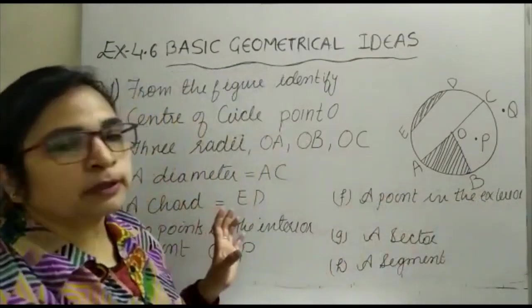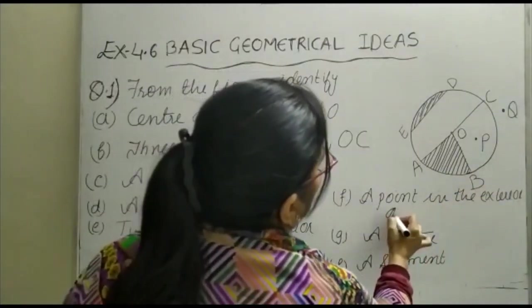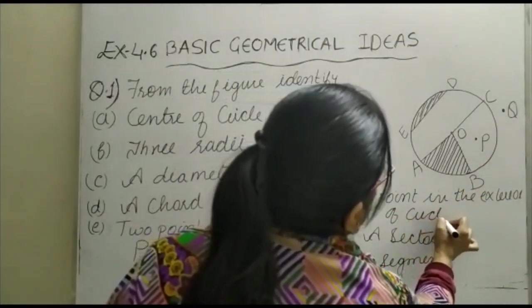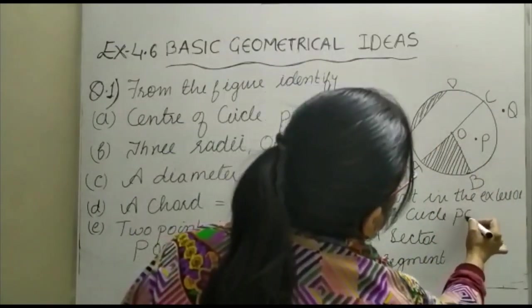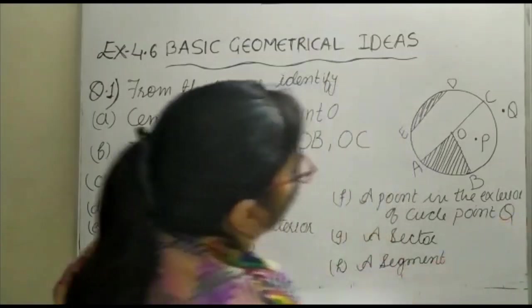A point in the exterior. Exterior means outside the circle. Which point is outside the circle? That is point Q.